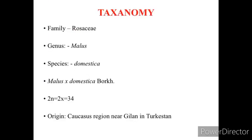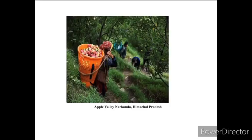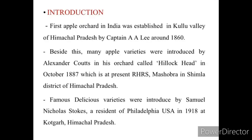Apple belongs to the family Rosaceae, genus Malus, species domestica, chromosome number is 34. The origin of apple is from the Caucasus region near Gilan in Turkestan. The first apple orchard in India was established in Kullu Valley of Himachal Pradesh by Captain A.A. Lee around 1860.